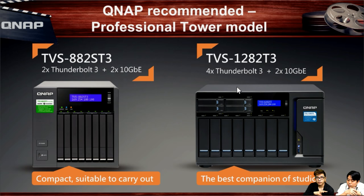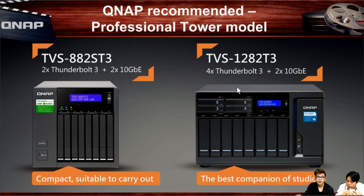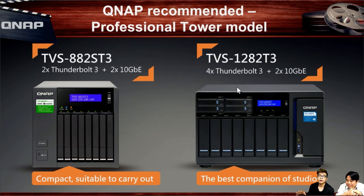If you're shooting videos on location, the 882ST3 is portable enough to bring with you. After shooting, use the front-panel USB port with one-click copy to transfer everything to the NAS and share immediately with your team for editing. When done, use RTRR to back up everything to your central server. The TS-1282-T3 offers four Thunderbolt 3 and two 10-gigabit ports with higher performance, larger storage, and critical task support. For teams larger than six people, add the Q-Switch so all members can enjoy 10 gigabit transmission.